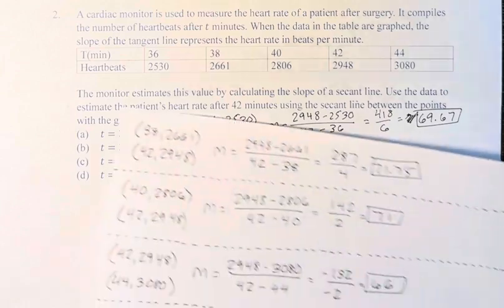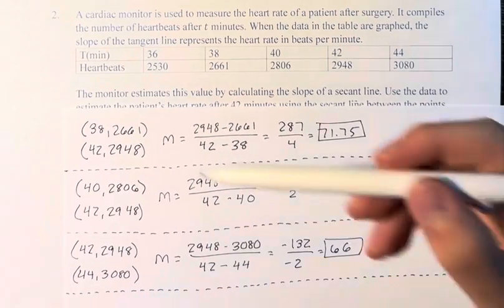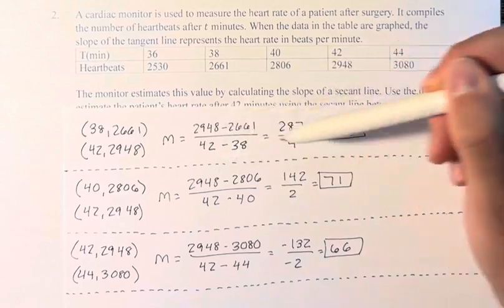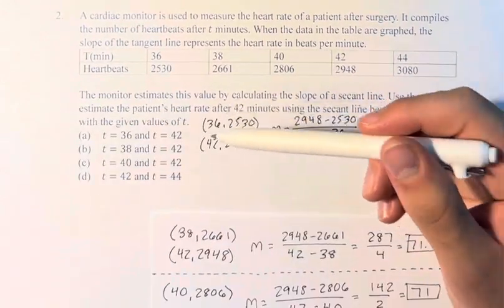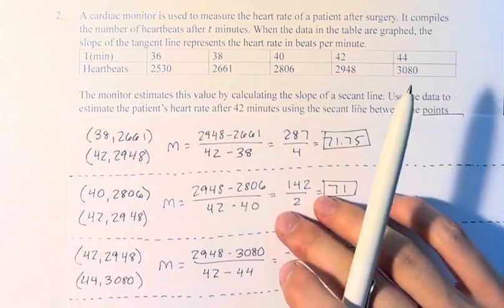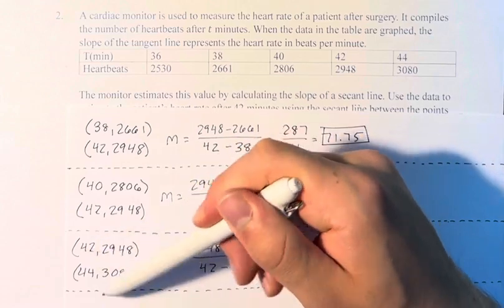And I have calculated for the three other points ahead of time, just because it's the same process. But you take your two points, find the slope between them, and that is simply your answer for t equals 36 and 42, 38 and 42, 40 and 42, and 42 and 44.